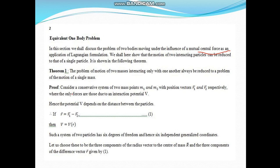Consider a conservative system of two mass points M1 and M2 with position vector R1 and R2 respectively, where the only forces are those due to an interaction potential. You can see in the figure there are two mass particles M1 and M2 having position vector R1 and R2, and let us suppose that R is the center of mass.